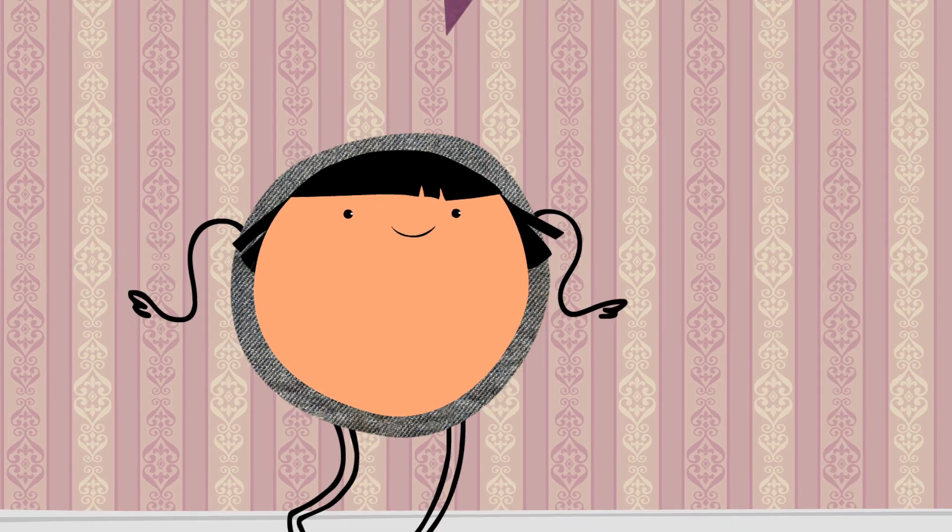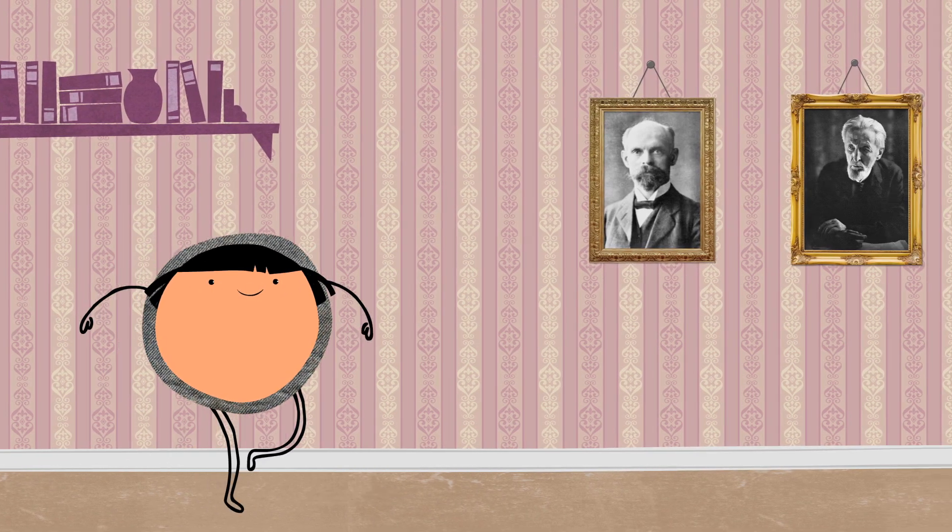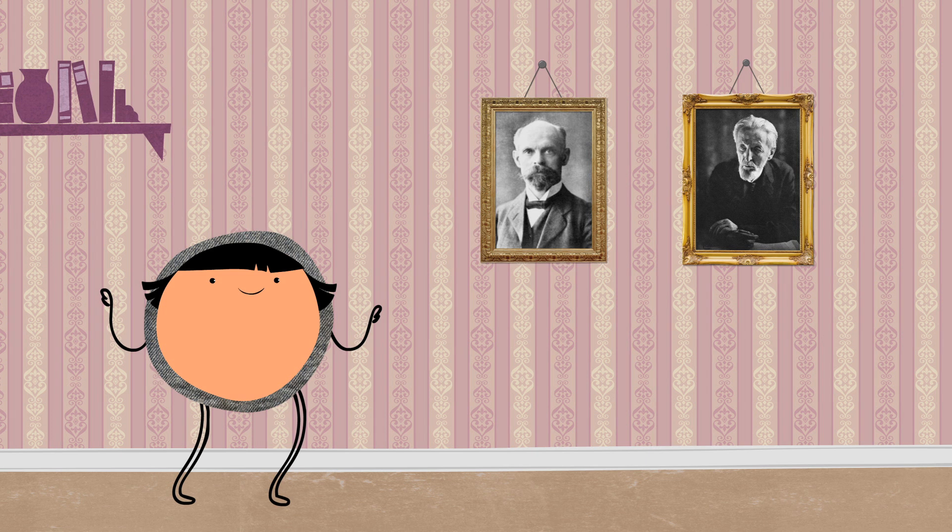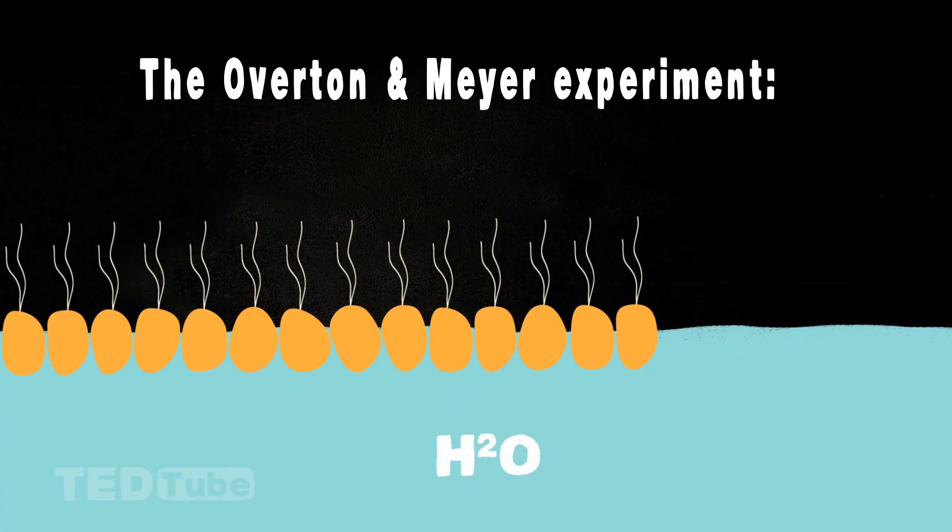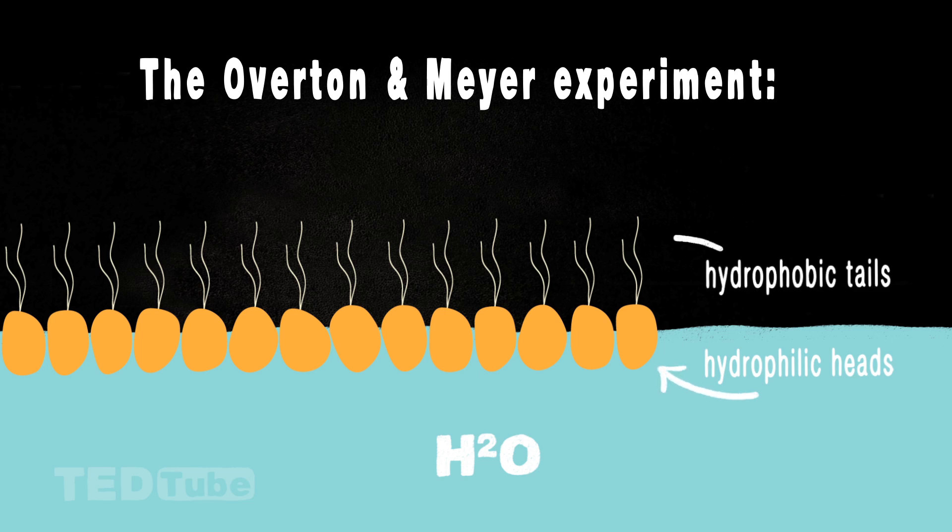Well, at the turn of the 20th century, chemists Charles Overton and Hans Meyer demonstrated that the cell membrane is composed of substances that, like oil, have a water-loving part and a water-loathing part. We now call these substances lipids.